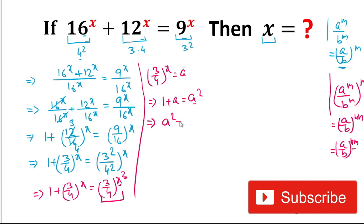Now we rearrange the equation. We move a to the left hand side: a² - a = 1. Now on the left hand side we will try to make a perfect square form.